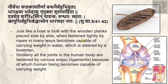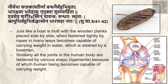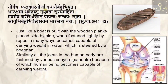Shushruta provides a simile about the function of snayu: naur yatha falakasthirnaa bandhaner bahubhiyyutaha bharakshama bhavedapsu niyukta su samahitaha — just like a boat is built with wooden planks placed side by side and fastened tightly by ropes in many ways, it becomes capable of carrying weight in the water when steered by a boatman.